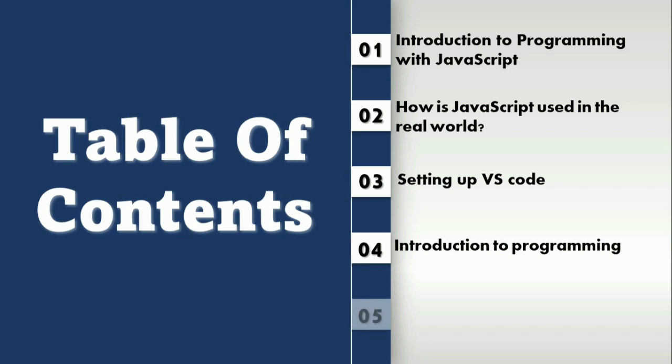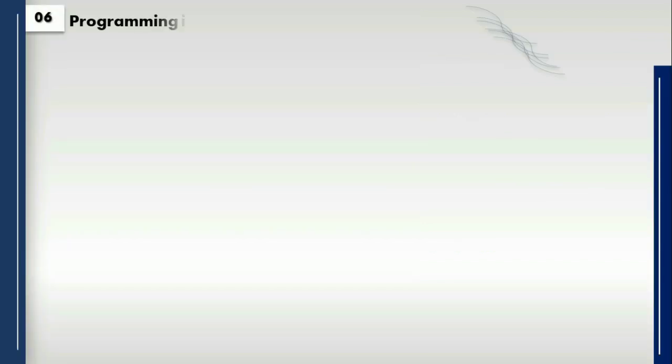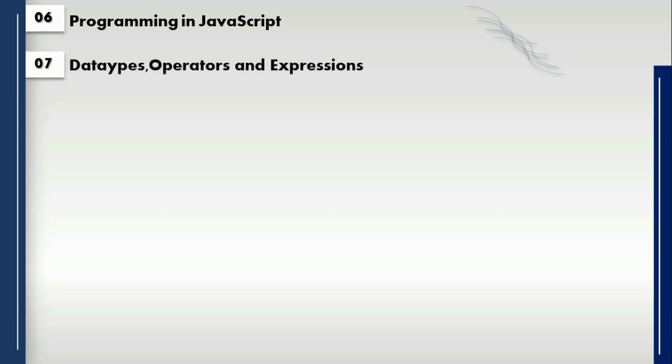Then we will understand variables in JavaScript — let, const, and everything we are going to see in this variable section. Then we will come to programming in JavaScript: first we will understand what is programming, then we will see how to do programming in JavaScript. After that, data types, operators, and expressions — everything we are going to see.